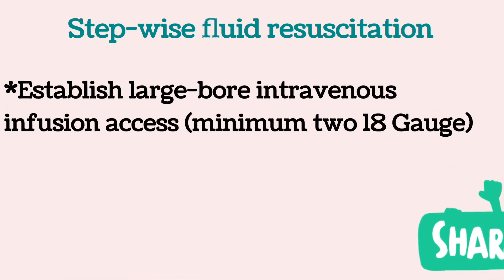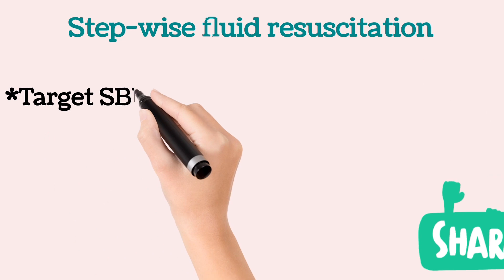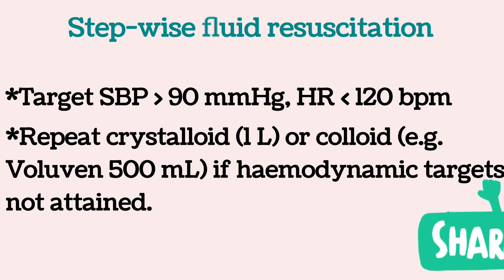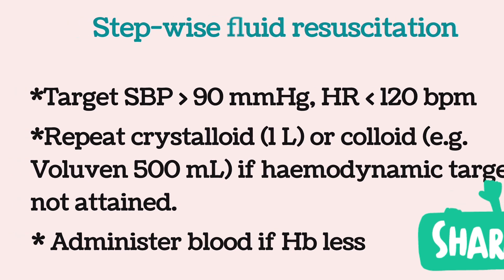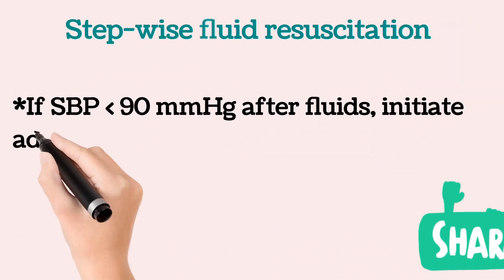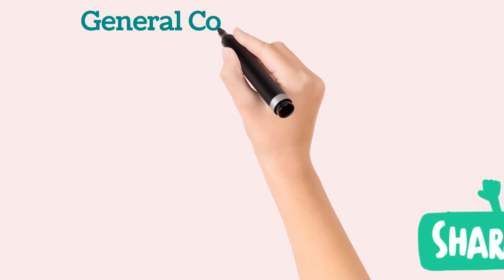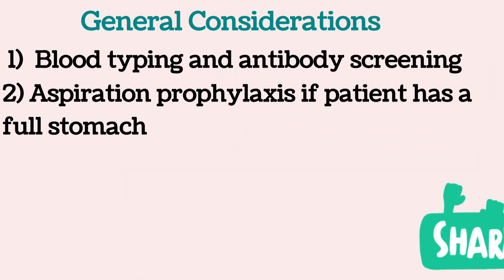The step-wise fluid resuscitation strategy is: establish large-bore intravenous access with a minimum of two 18-gauge cannulas; give 1 litre of crystalloid rapidly, preferably Ringer's lactate or normal saline; target systolic blood pressure greater than 90 mmHg and heart rate less than 120 bpm. Repeat crystalloid 1 litre or colloid if hemodynamic targets are not attained. If hemoglobin is critically low, blood should be administered pre-induction. If systolic blood pressure remains less than 90 mmHg after fluid correction, initiate adrenaline infusion and expedite surgery. Blood typing and antibody screening must be done, and aspiration prophylaxis should be maintained if the patient has a full stomach.